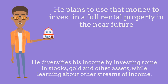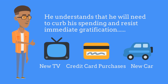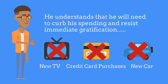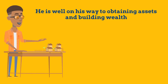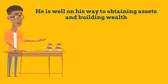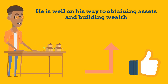He plans to use that money to invest in a full rental property in the near future. He diversifies his income by investing in stocks, gold and silver, and other assets, while learning about other streams of income. He understands that he will have to curb his spending habits and resist immediate gratification.